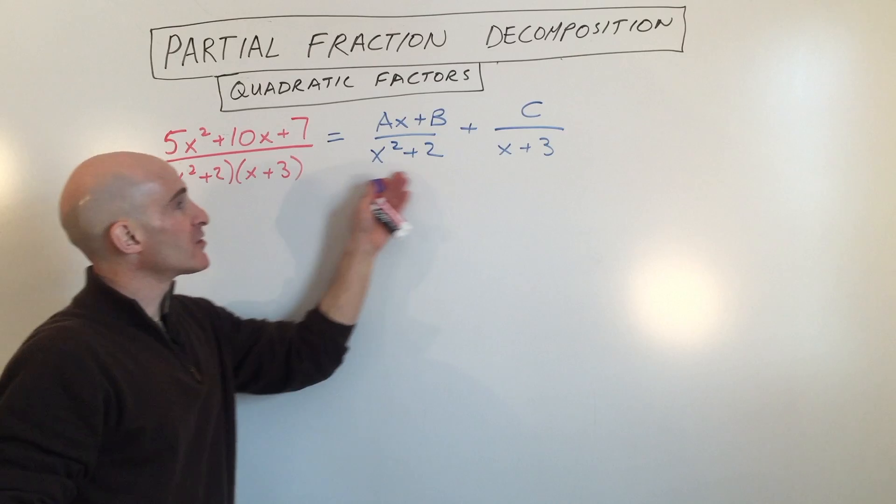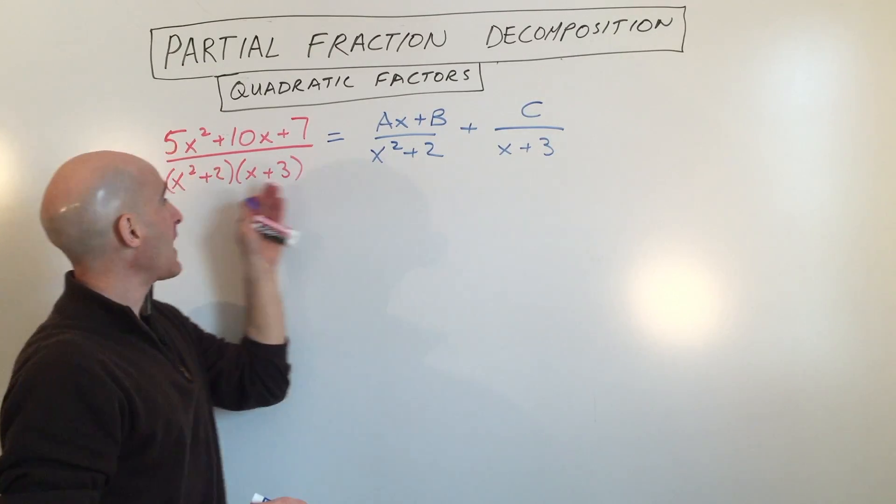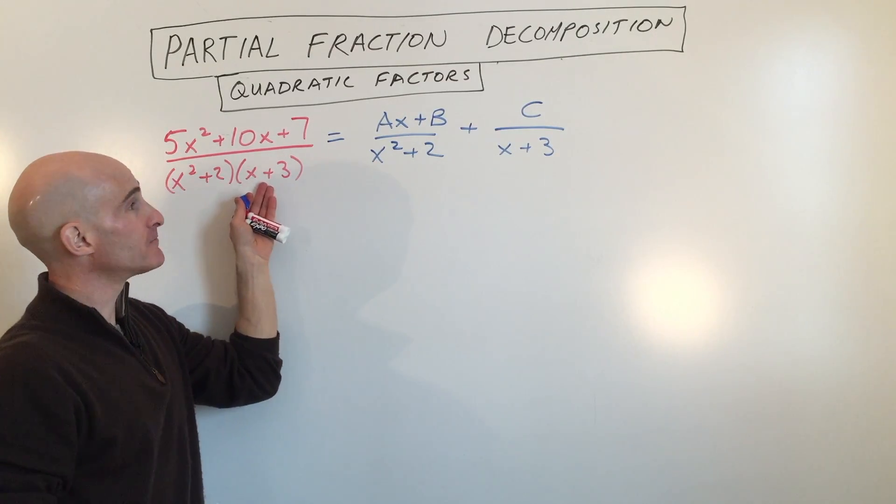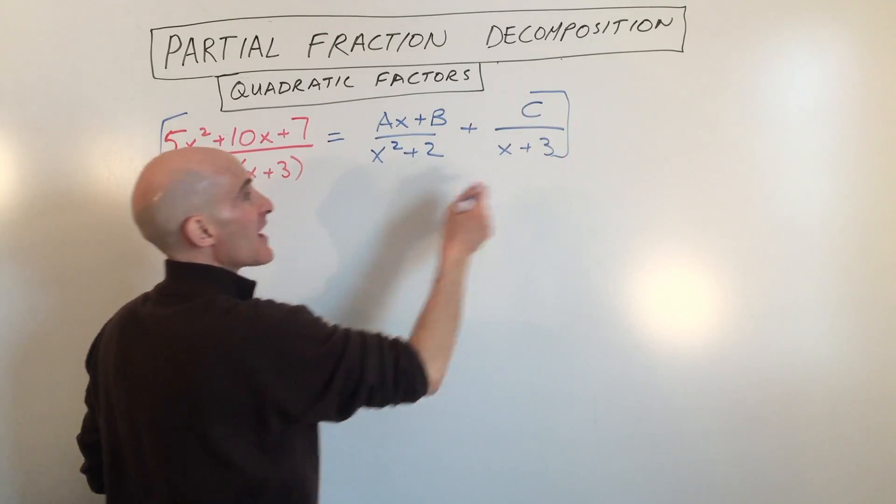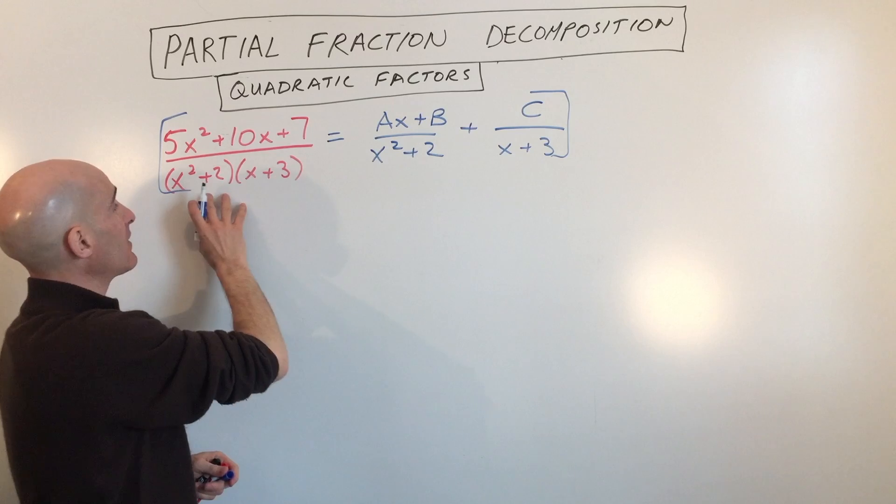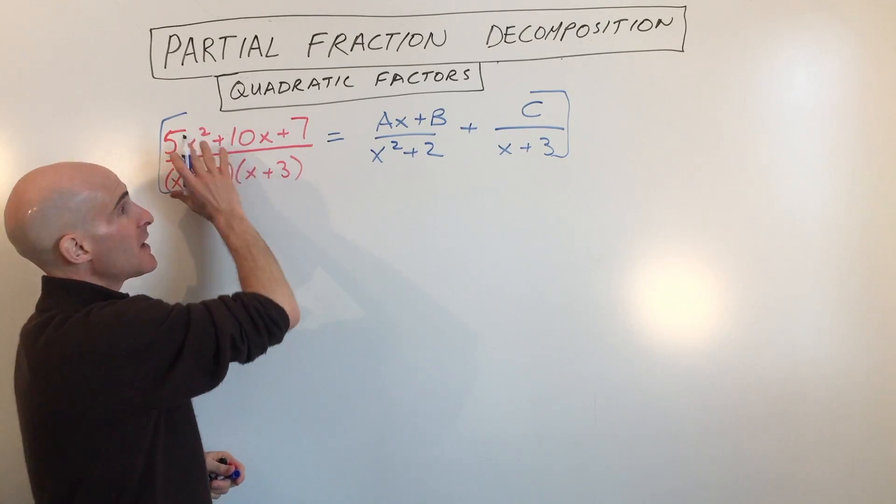So now all we're going to do is we're going to clear the denominators by multiplying by the common denominator. This is the common denominator here. And so what I'm going to do is I'm going to multiply the left and right sides, the entire equation, by x squared plus 2, x plus 3.